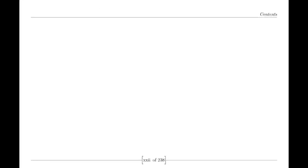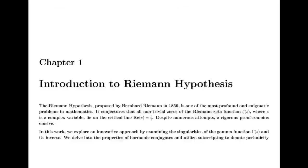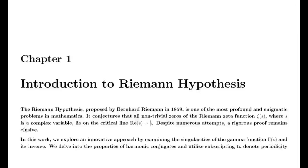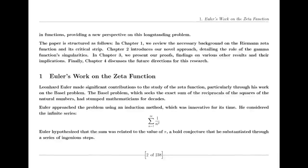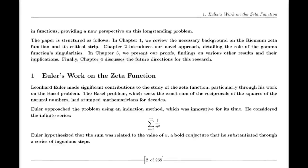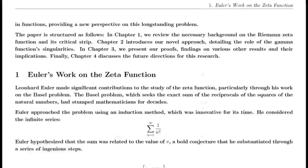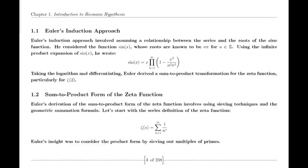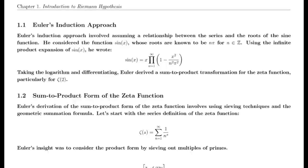Reflection properties. One of Riemann's major discoveries was the reflection formula for the zeta function. This formula demonstrates a symmetry between the values of the zeta function at s and 1 minus s. Specifically, it shows that zeta of (1 minus s) can be expressed in terms of zeta of s using factors involving pi, the gamma function, and trigonometric functions. This reflection formula is fundamental to the theory of the zeta function and provides deep insights into its structure.